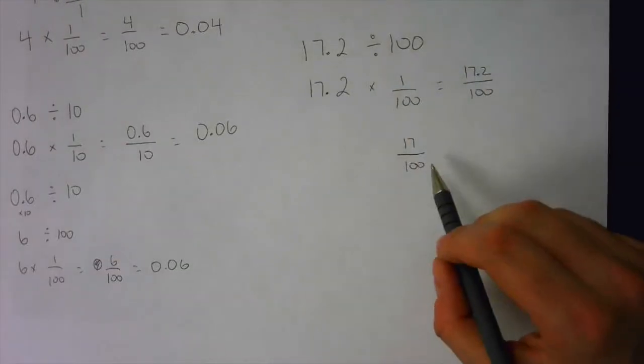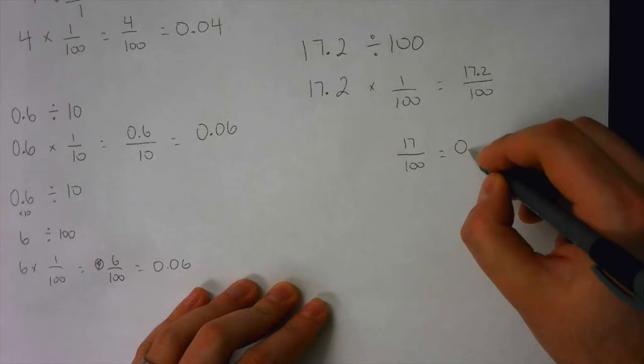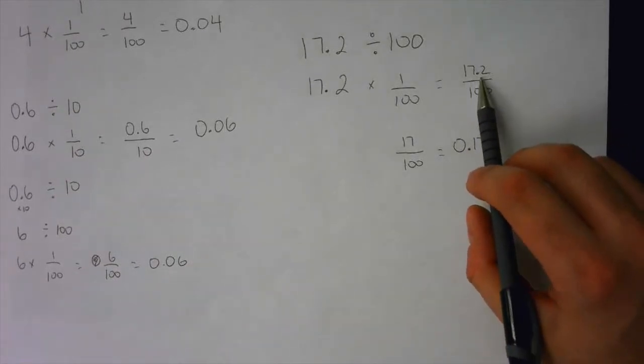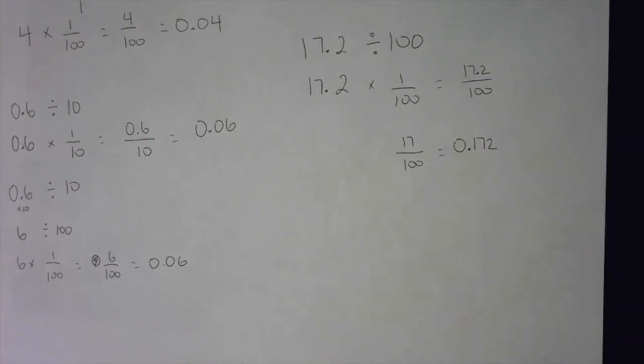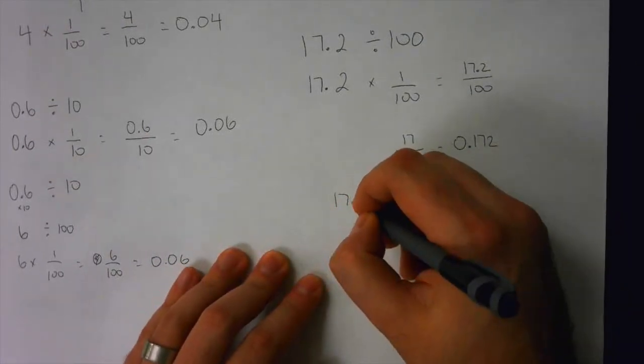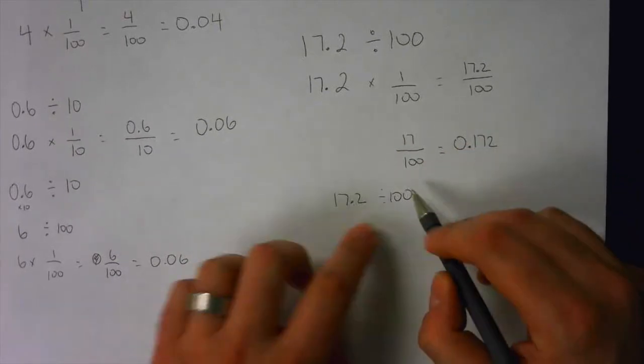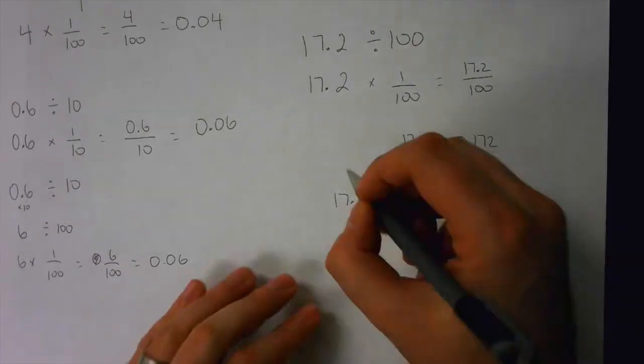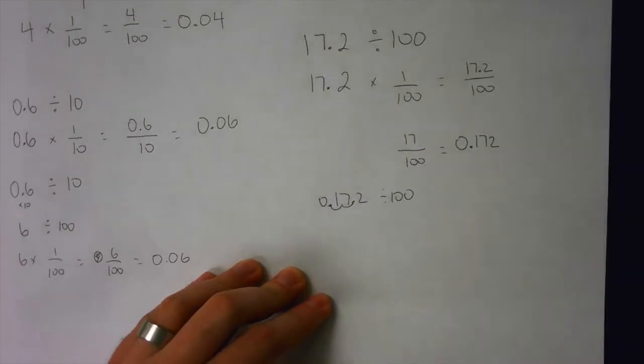So 17 over 100 would equal 0.17. When you have 17.2, there's a little trick here. You just put the 2 at the end. Okay? So 17.2, and the other way to do this, if it's divided by 100, because there's two zeros here, it's got to jump two decimal spots. 1, 2, 0.17.